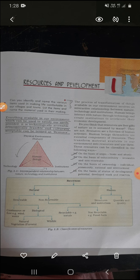Now see this flow chart — classification of resources. Resources are categorized into two parts: natural and human resources. Natural resources are again subdivided into renewable and non-renewable resources. Renewable resources are divided into two parts: continuous or flow — example wind or water — and biological. Biological renewable resources are also divided into two parts: natural vegetation and wildlife.